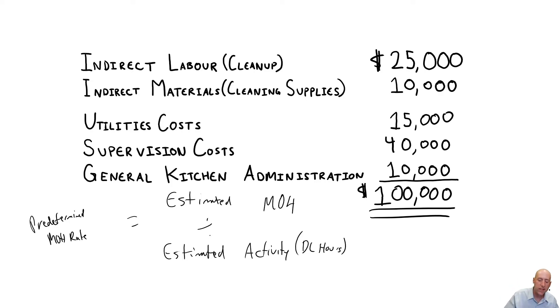So in this circumstance, let's say we've estimated overhead to be $100,000 based on some cleaning supplies, some utilities costs, supervisor salaries, assuming the supervisor doesn't have their hands on the product, and some general kitchen administrative costs. Let's say this company looks at the direct labor workforce, and they say they're going to work about 10,000 direct labor hours this period or this year. What is our overhead rate? Well, it's $10 per direct labor hour.